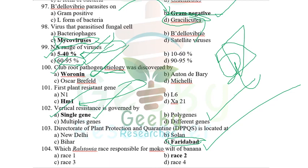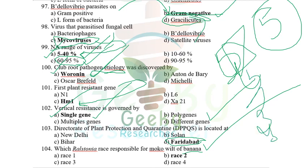Which race of Ralstonia solanacearum is responsible for Moko wilt of banana? Race 1 infects solanaceous crops; Race 2 infects Musa (banana/cavendish varieties); Race 3 infects potato; Race 4 infects ginger; Race 5 infects mulberry. Moko wilt of banana is caused by Race 2.